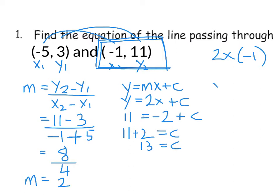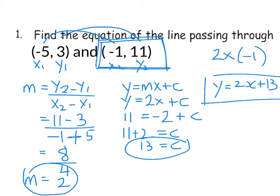So the last step is to rewrite the equation. So we knew our gradient down here was minus two. Sorry, it was two. So y equals two x. And our c value is 13. So two x plus 13. That is our final answer for the equation of that straight line. Let's try another one.